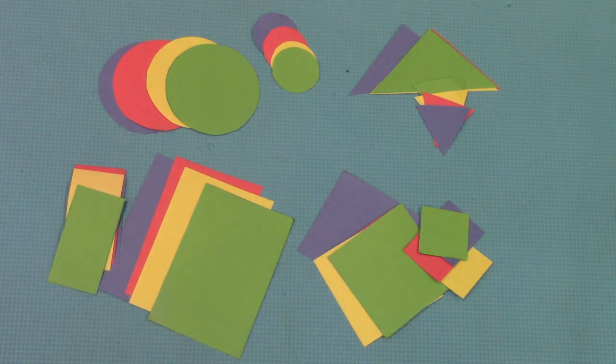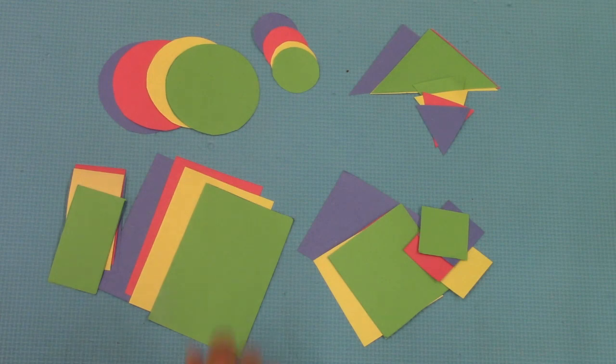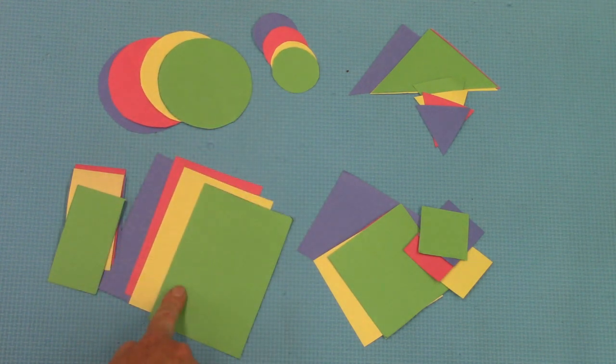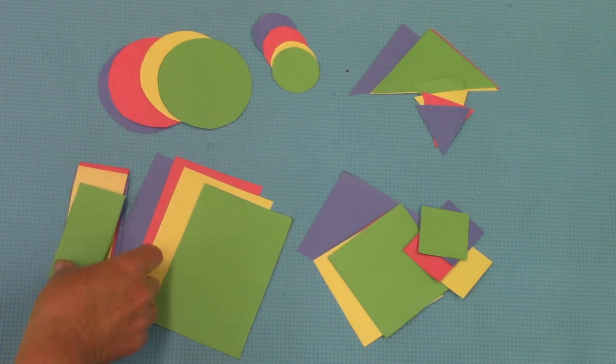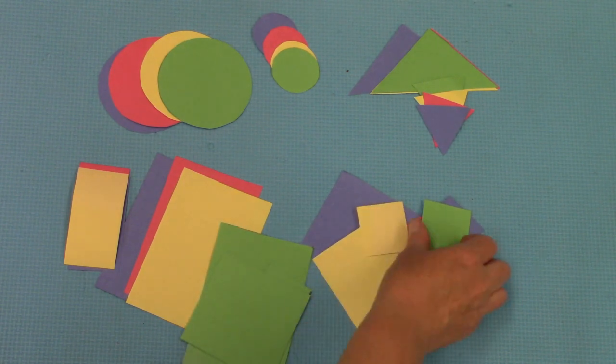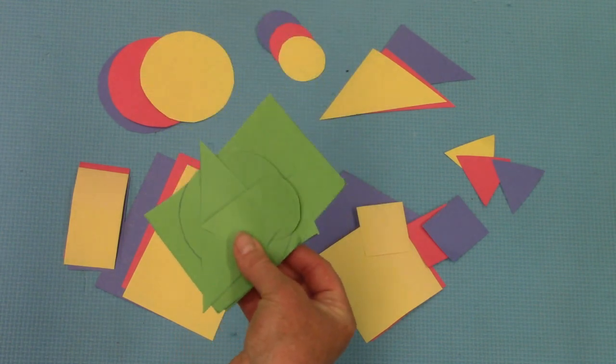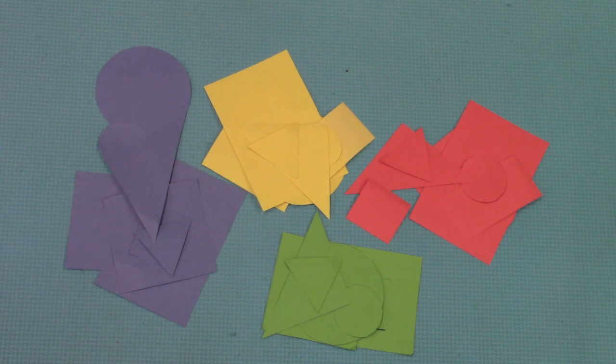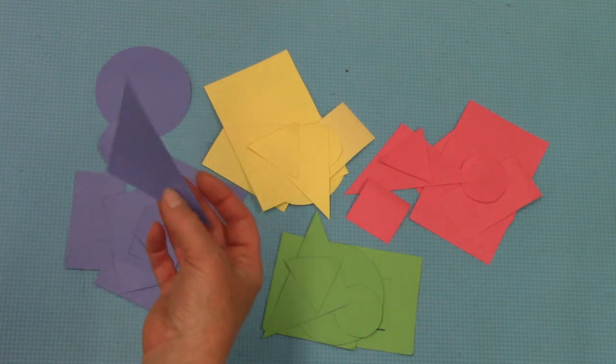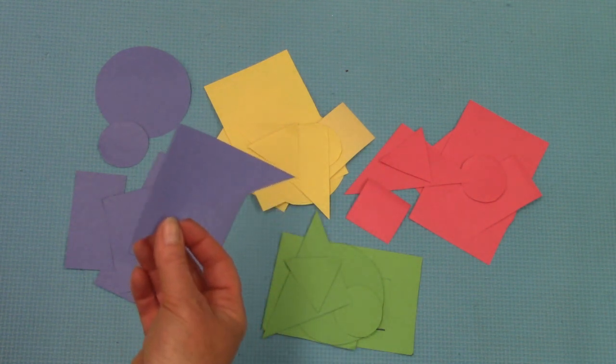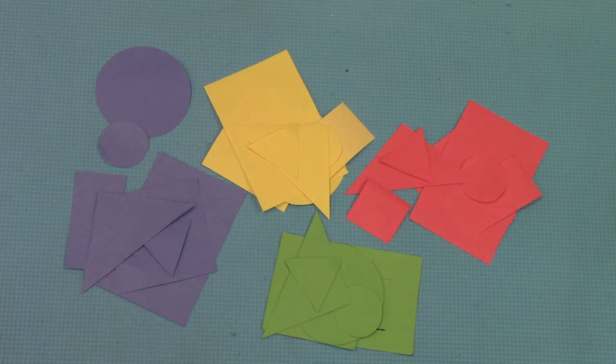So today we are going to do some sorting. I've already sorted them by shape and by size. Big circles, little circles. Big rectangles, little rectangles. So what's another way that we could sort them? I could do all of the green shapes together. So we could organize all of our shapes by color. When we're sorting by attribute, we're often sorting by things like color or by shape. We could put all of the triangles together, or we could just put all of the large shapes together and all of the small shapes in another pile.